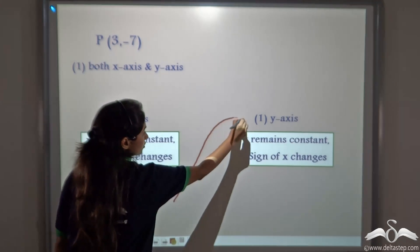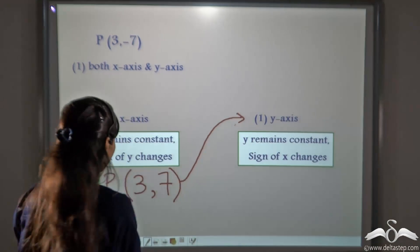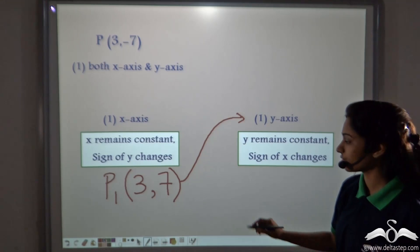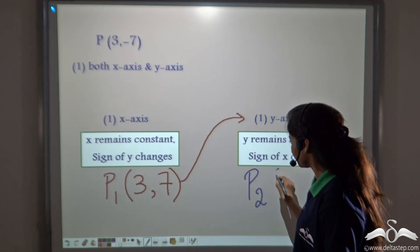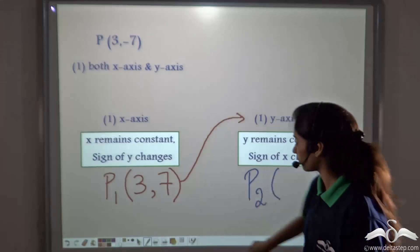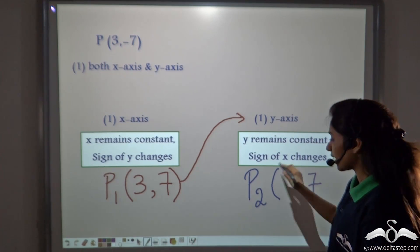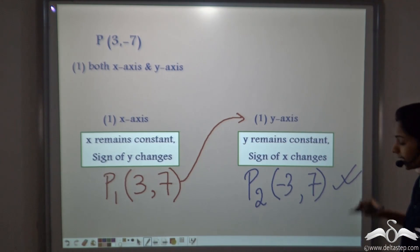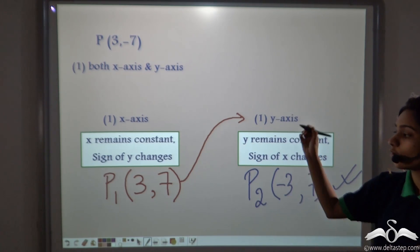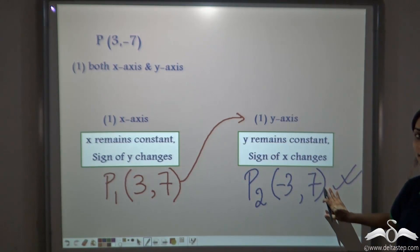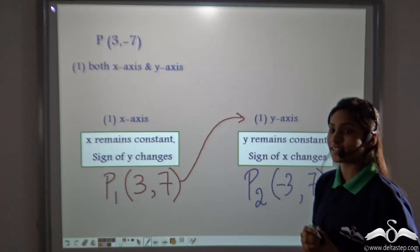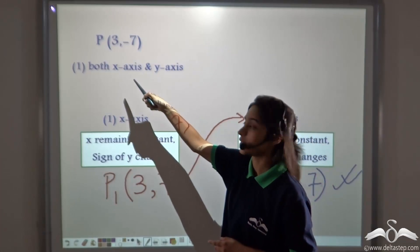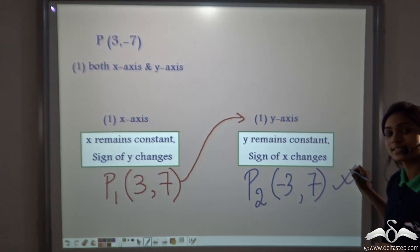Now we reflect P1 on the y-axis. When we reflect a point through the y-axis, y remains constant and the sign of x changes. So P2: y stays as 7, and 3 becomes minus 3. So P2 is (−3, 7). This is the final image after P is reflected from both the x-axis and y-axis. Interestingly, if you had first reflected on the y-axis and then on the x-axis, you would have got the same image.